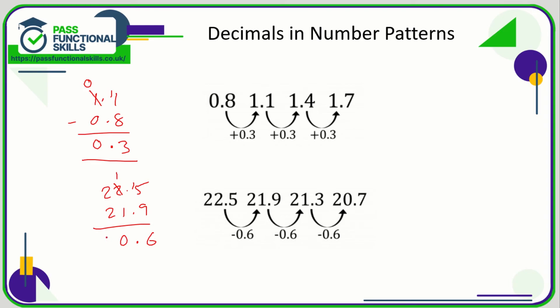1 minus 1 is 0, 2 minus 2 is also 0, so 0.6. Well we would probably say that that is 0.6. So we are going down by 0.6, so the number pattern is the previous number with 0.6 taken off it gives us the next number.